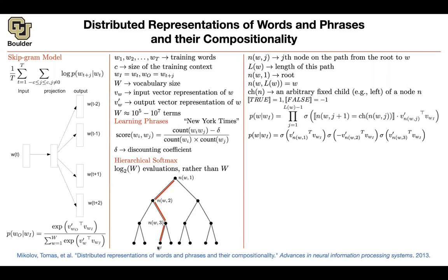How do we build this tree? It doesn't really matter — any tree reduces computational cost from W to log₂(W). But if you build it smartly, you can get better expected performance. If you assign shorter paths to more frequent words, you compute their probabilities faster. For rare words you take a longer path, but since you see them less frequently it doesn't affect the expected computational cost much. This is the idea behind binary Huffman trees.